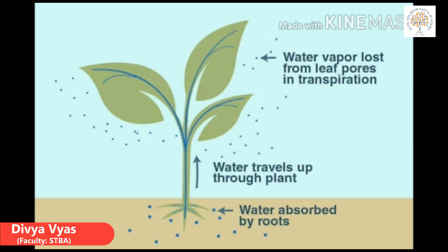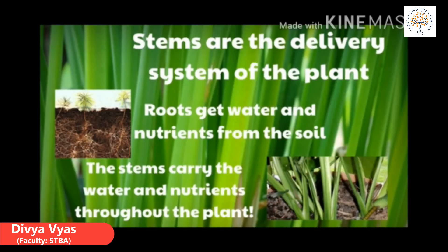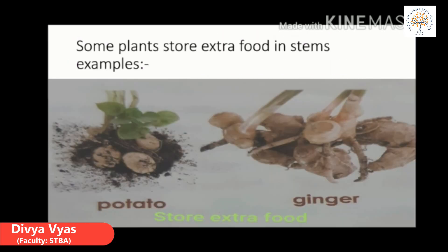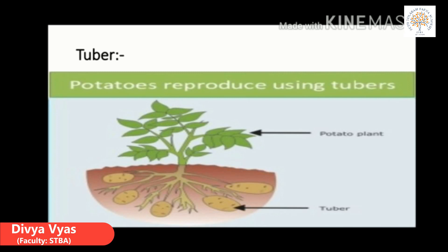Let's discuss about the functions of the stem. The stem carries water and mineral salts from the roots to the rest of the plant. The stem carries food made by the leaves to the rest of the plant. Stems are the delivery system of the plant — the roots get water and nutrients from the soil, and the stems carry the water and nutrients throughout the plant. The stems hold the plant up above the ground. Sometimes extra food is stored in the stem, for example, potato, ginger and sugar cane. Potato and ginger are stems that grow underground and are called tubers.